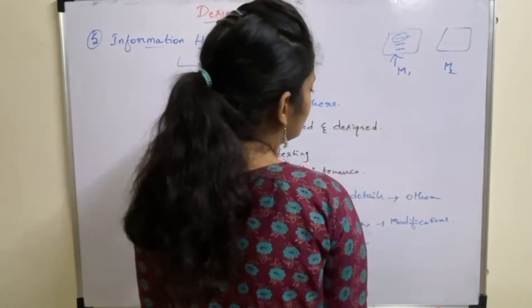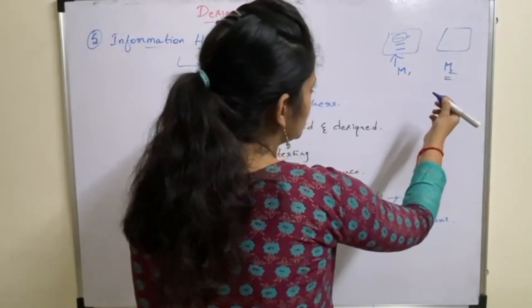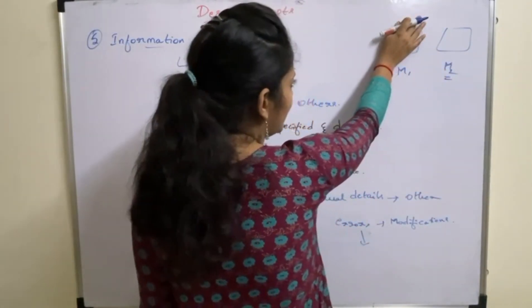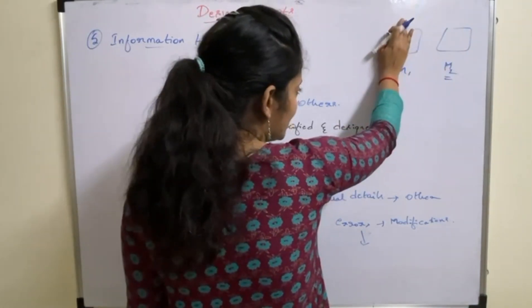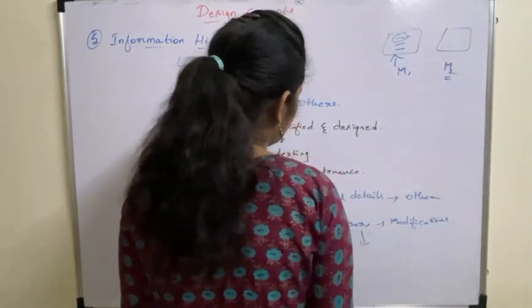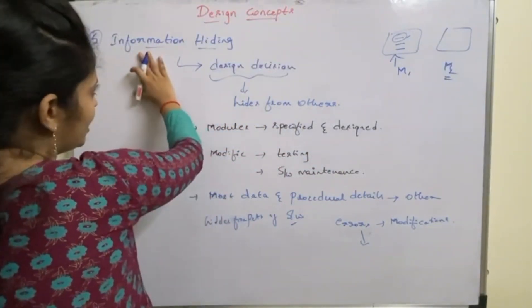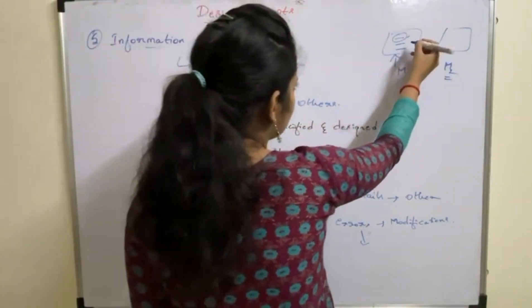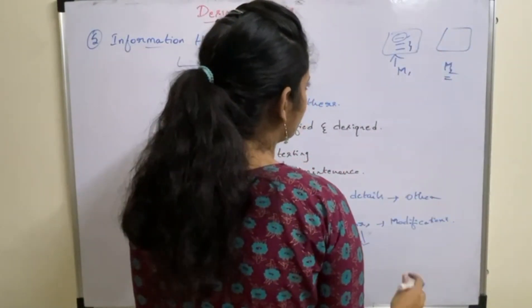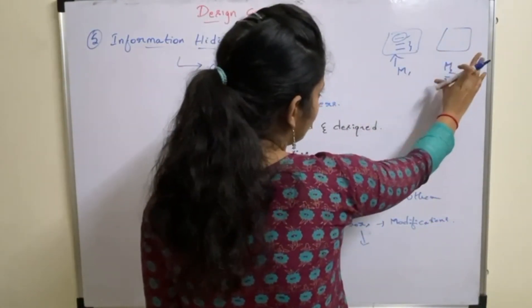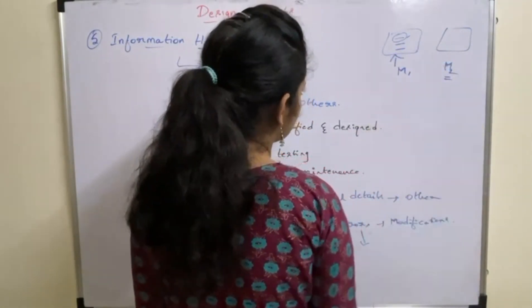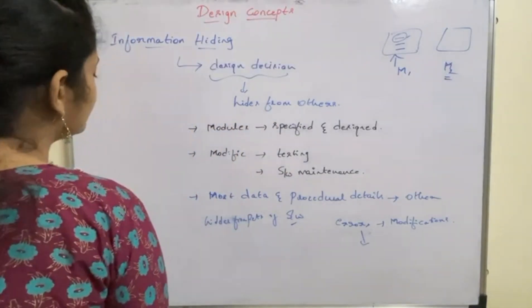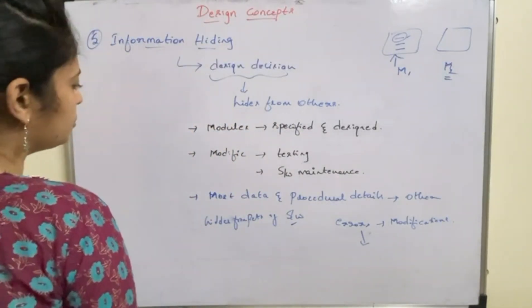If nothing is visible to M2, then it can't make use of any information from M1. So even if there is an error in M1, as it is not used in M2, the error will not show any negative impact on other modules. That is the advantage of information hiding. Of course, if information in M1 is required by M2, then access will be given. But if it is not required, there is no need to provide access to other modules.